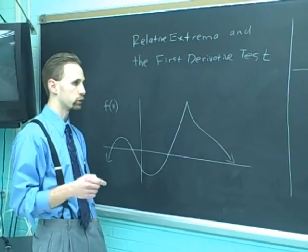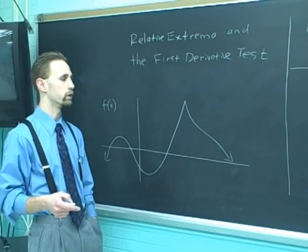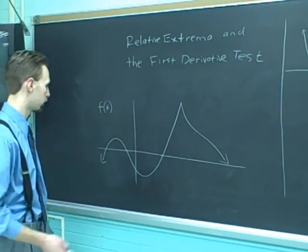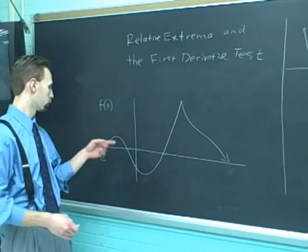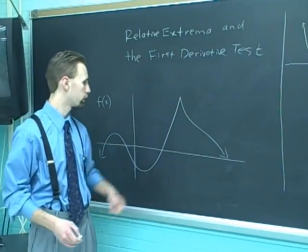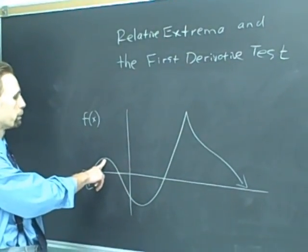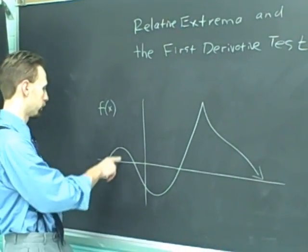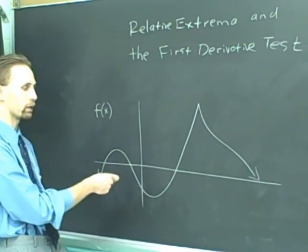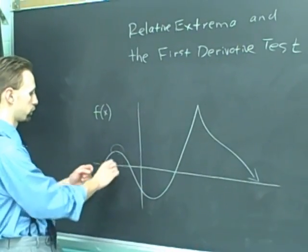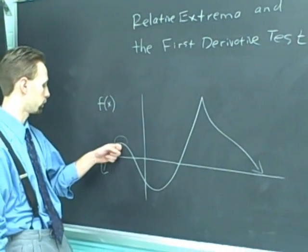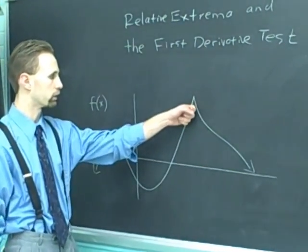A critical number is where a function's derivative is either zero or undefined. So for this function here, this has three critical numbers: one, two, and three. This one here, this is what we call a relative maximum or a local max, because it is a maximal value local to the surrounding points. You have a relative max, min, relative max.